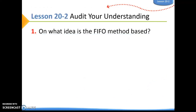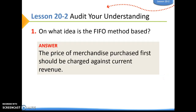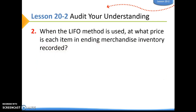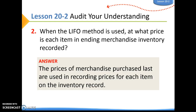Audit your understanding, number one: on what idea is the FIFO method based? The price of merchandise purchased first should be charged against the current revenue — the first things that we bought are going to be the first things that we sell. Number two: when the LIFO method is used, at what price is each item in merchandise inventory recorded? The prices of merchandise purchased last are going to be used in recording prices for each item on the inventory record.